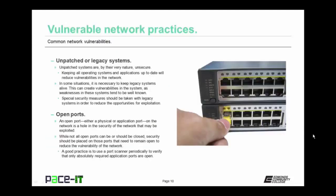Now it's time to talk about vulnerable network practices. First up are unpatched or legacy systems. Unpatched systems are by their very nature unsecure. Keeping all operating systems and applications up-to-date will reduce vulnerabilities in the network and help to harden that network against attack. In some situations, it is necessary to keep legacy systems alive. This can create vulnerabilities as weaknesses in these legacy systems tend to be well known. Special security measures should be taken with legacy systems to reduce the opportunity for exploitation. One of the best steps is placing these legacy applications or systems on their own network or on their own virtual local area networks.